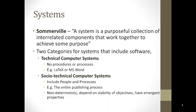A system is a purposeful collection of interrelated components that work together to achieve some purpose. There are two categories for systems that include software. One are technical computer systems, which really don't have any procedures or processes associated with them. For example, LaTeX or MS Word — there's no business process or systemic process for using Microsoft Word; it's used in a variety of different contexts.